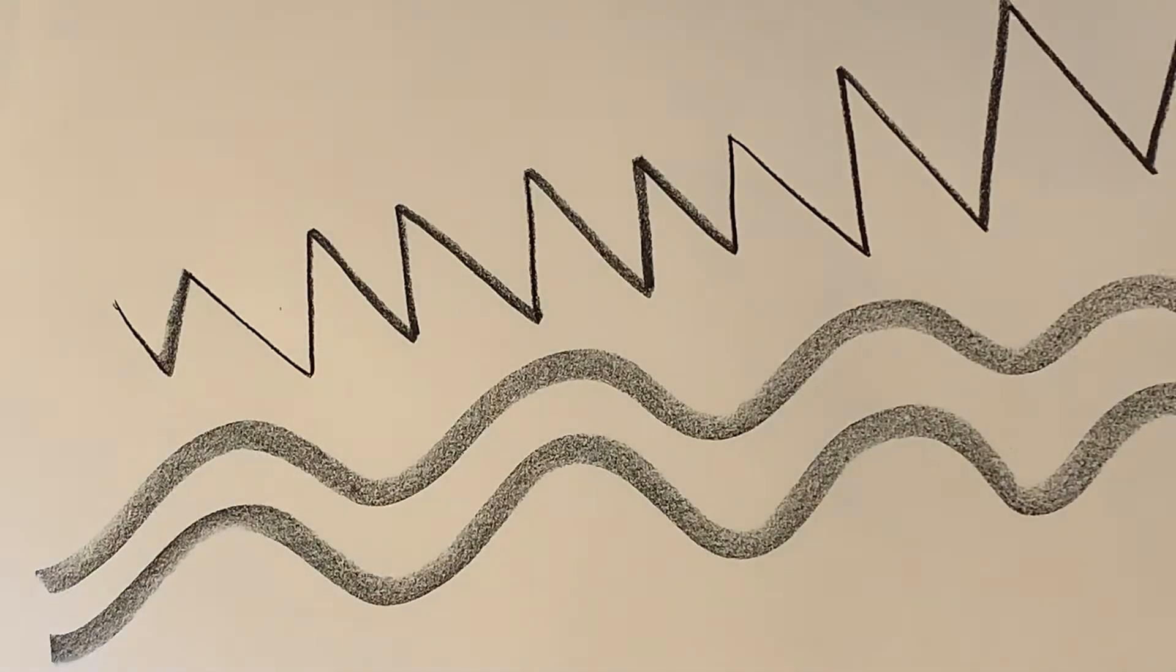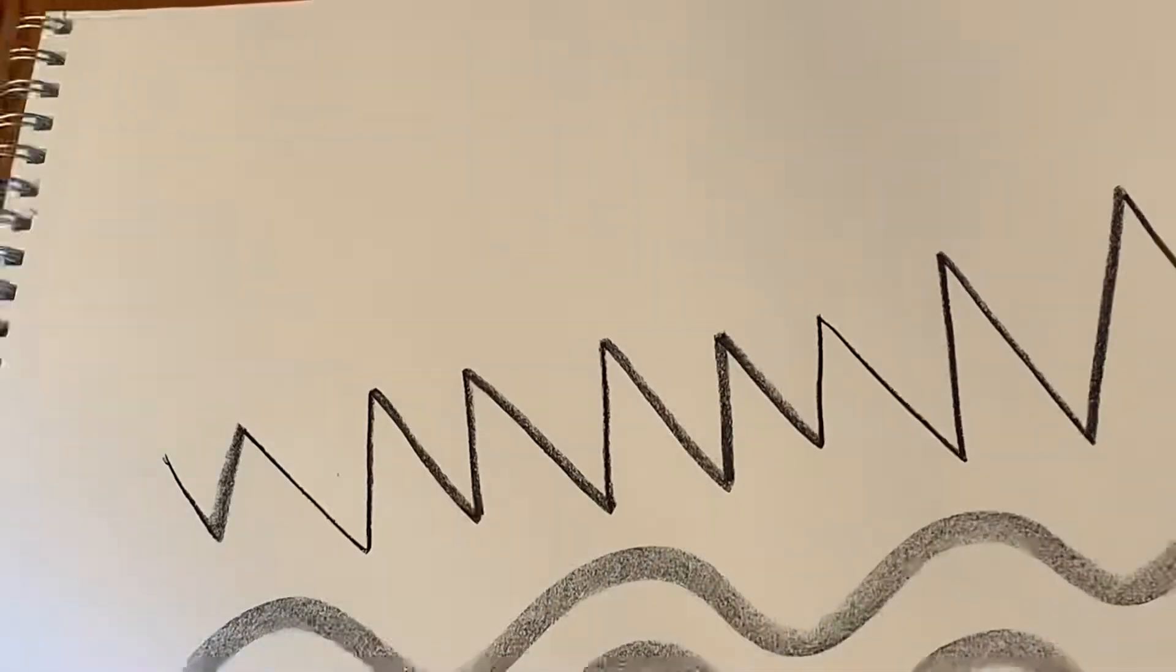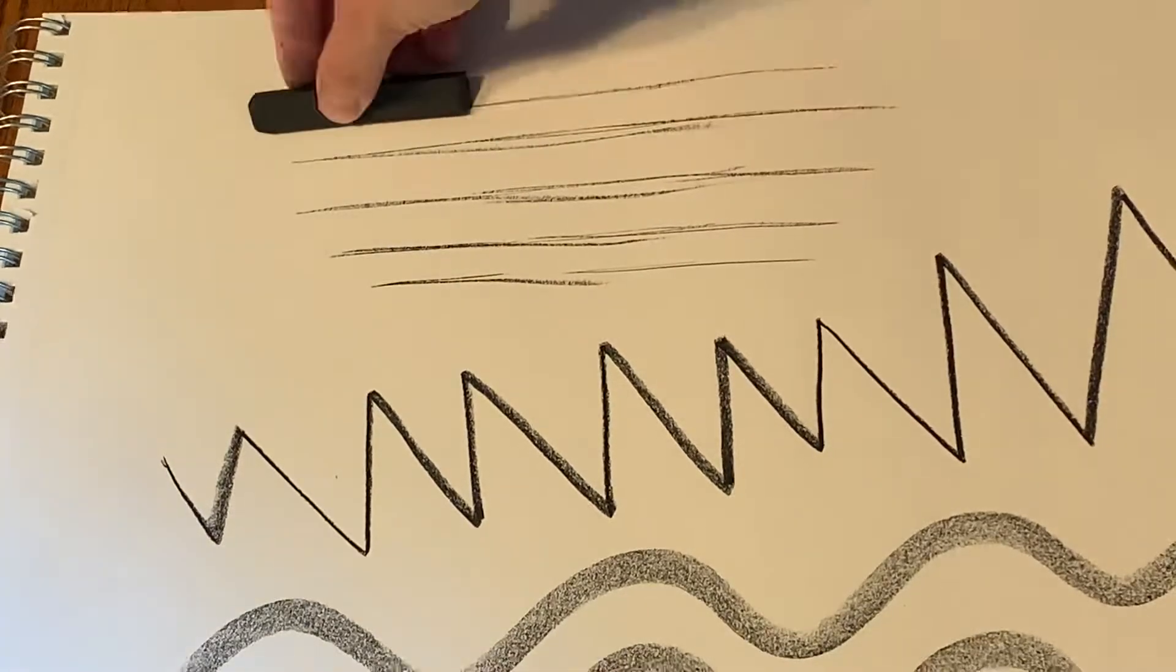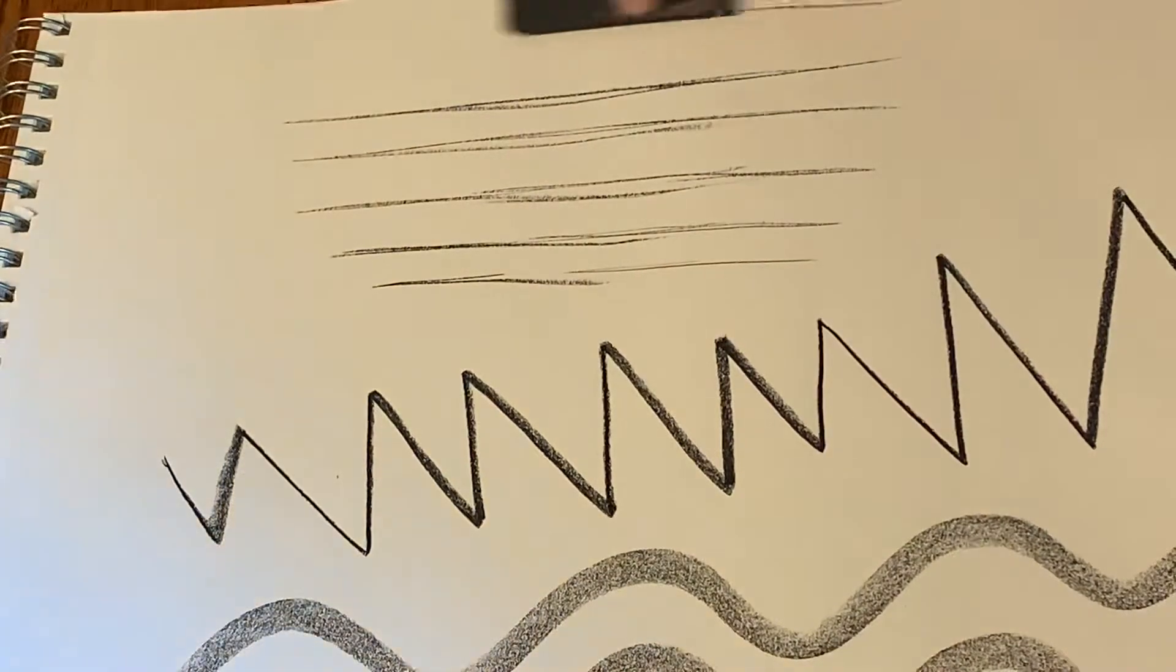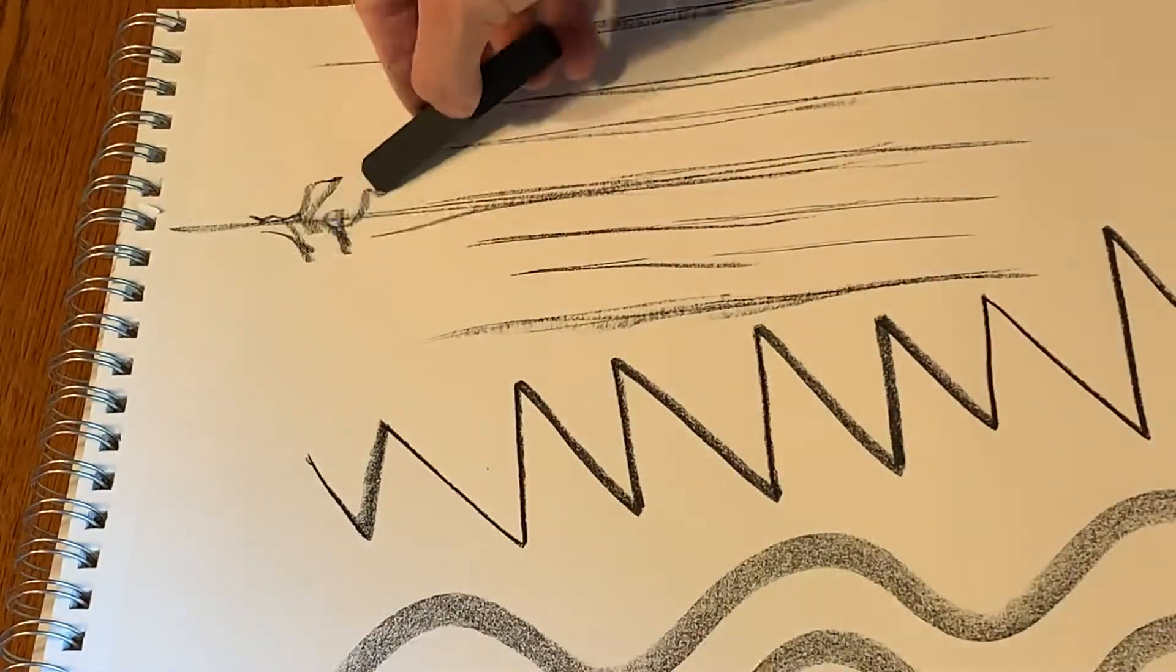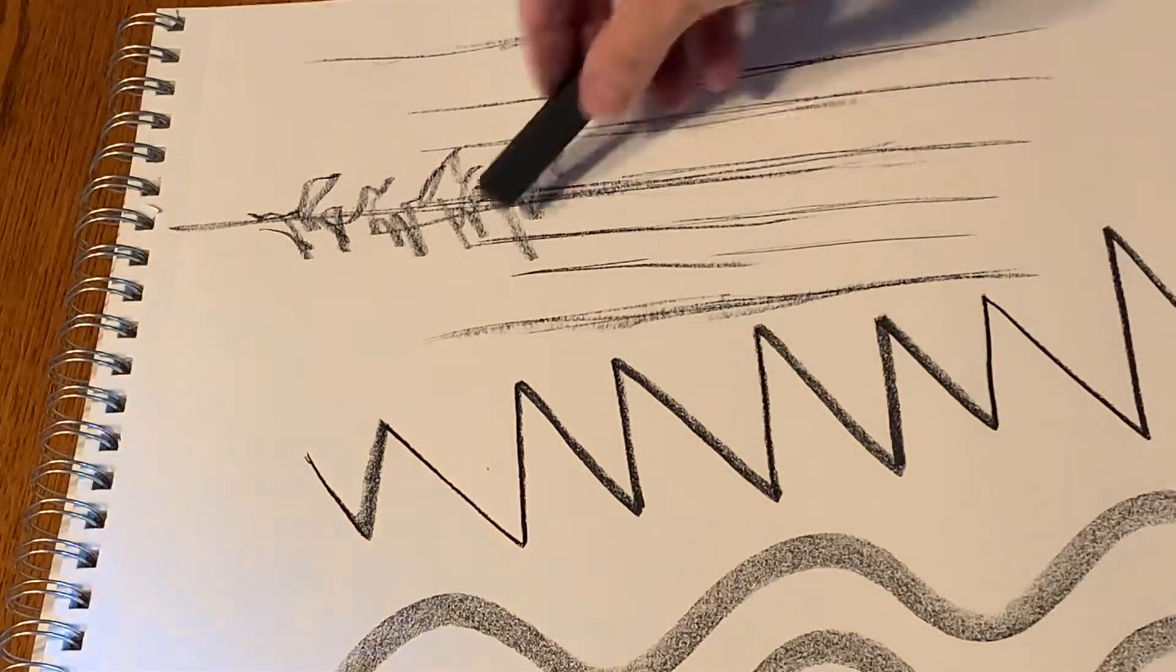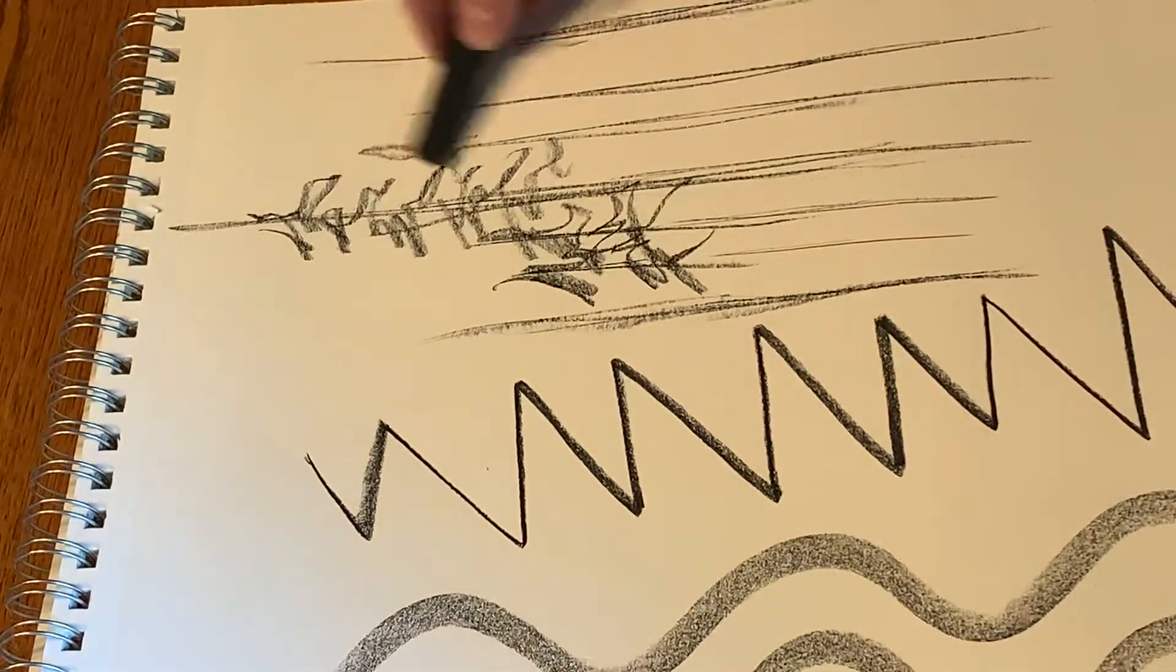Other things you can do is you can actually use this whole side here to make different kinds of lines. Just dragging that across and up and down, I can make these wispy lines. And what's fun to do with these kinds of lines is you can go back and just add a little bit of detail and turn your wispy lines into trees, and that's just a lot of fun.